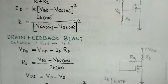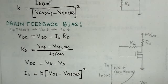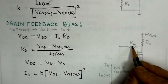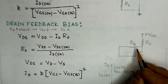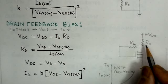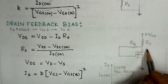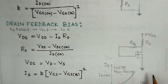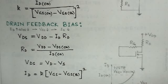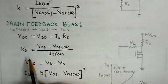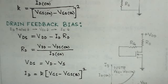The second bias arrangement is drain feedback biasing. RG is the resistance from drain to gate — a very high resistance with negligible current flowing through it. When ID increases, there is an ID·RD voltage drop, causing VDS to decrease, which in turn decreases VGS, correspondingly decreasing ID. This self-correcting arrangement accounts for changes in FET parameters. Here, VDS equals VDD minus ID·RD, and RD is given by (VDD minus VDS(on)) divided by ID(on).